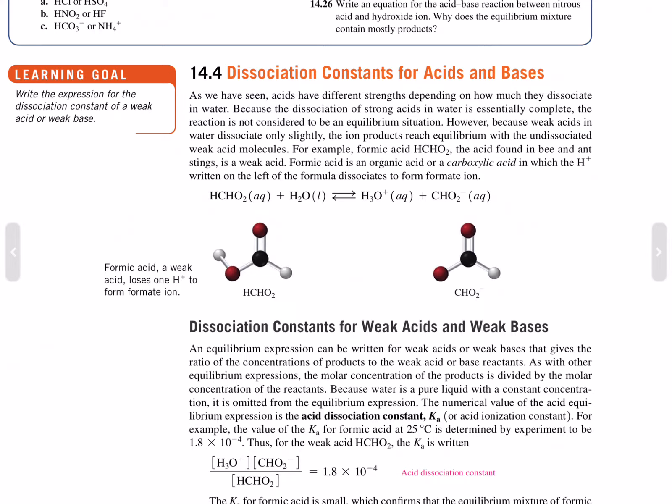However, because weak acids in water dissociate only slightly, the ion products reach equilibrium with the undissociated weak acid molecules. For example, formic acid, the acid found in bee and ant stings, is a weak acid.